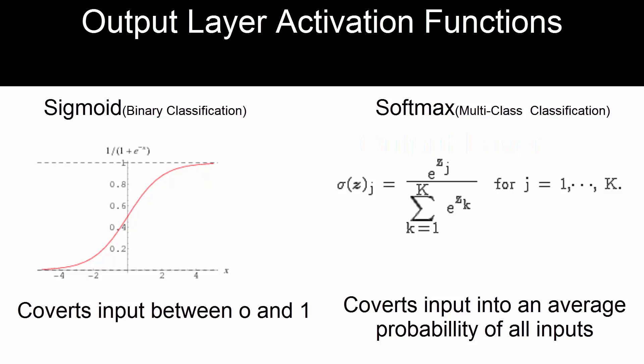Sigmoid is used for binary classification, so when you have two classes and you need the network to decide between the two classes, then sigmoid in the output layer does a wonderful job. It basically converts all inputs so it's very easy to differentiate between the two.